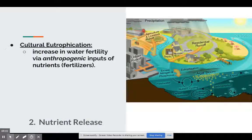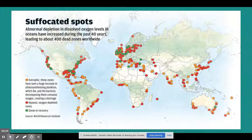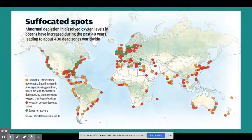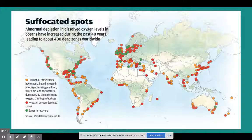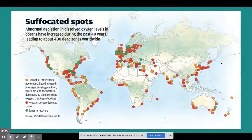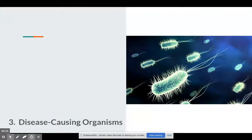This is happening all over the world, and you can expect it's occurring where rivers meet the oceans — almost the entire coast of the United States, even off in Europe and in Asia. You have this depletion of oxygen causing a huge disruption in the natural aquatic ecosystem.